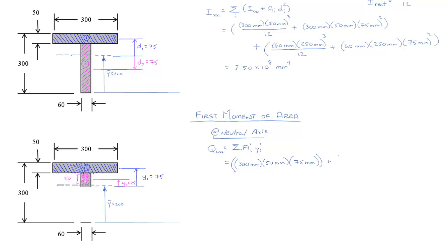And to that we add Area 2, which has a height of 50 millimeters. The thickness of the flange is 60 millimeters and its Y2 we determine to be 25 millimeters. That gives us a Q for the neutral axis. It should be a maximum at that point of 1.2 times 10 to the sixth millimeters cubed.